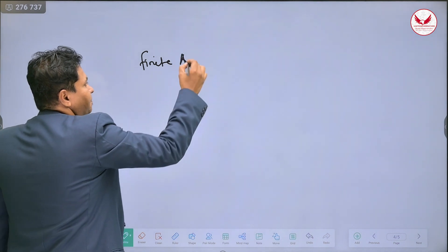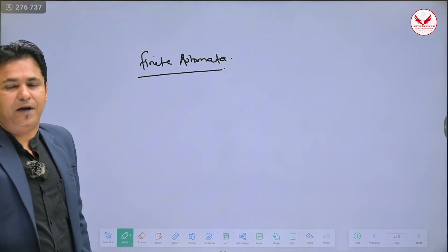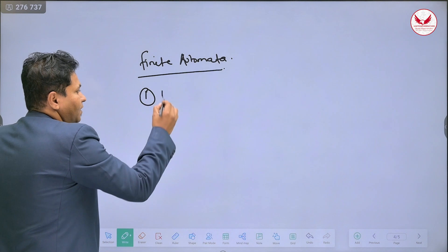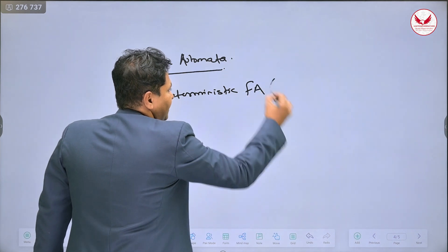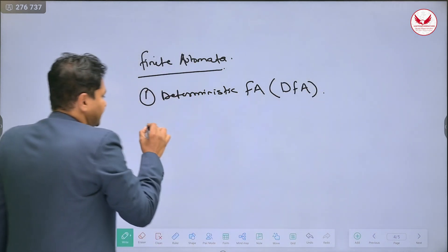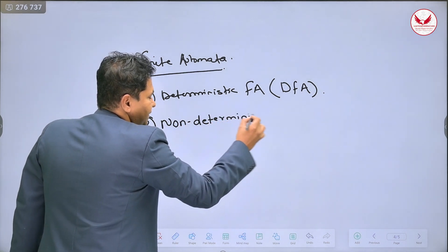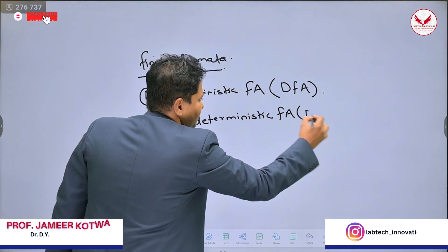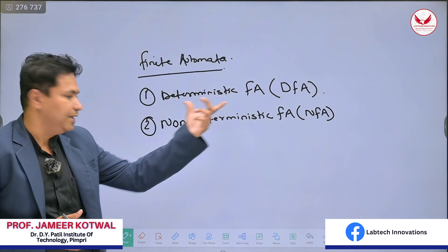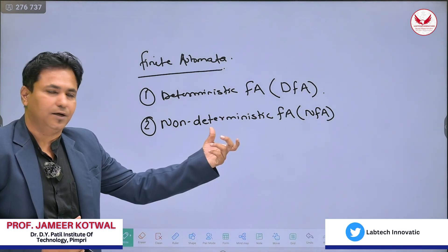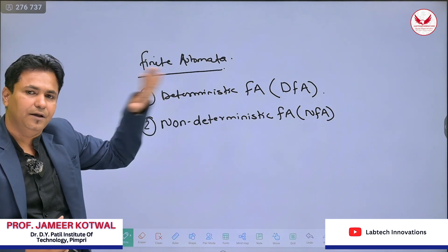What are the types of finite automata? The first one is the deterministic finite automata, known as DFA. And the second one is the non-deterministic finite automata, known as NFA. So there are two types of finite automata — DFA and NFA — and we will see them one by one.